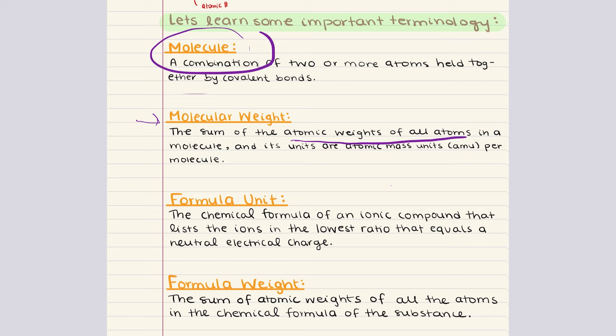In contrast, a compound is a substance composed of two or more different elements chemically bonded together. Compounds can form through either ionic or covalent bonding. Essentially all compounds are molecules, but not all molecules are compounds. Ionic compounds differ from covalent molecules in that they do not form discrete molecules due to the arrangement of oppositely charged ions in the solid state.